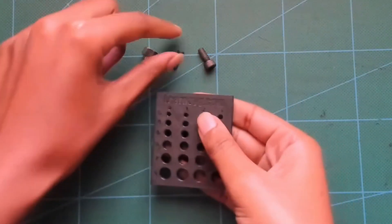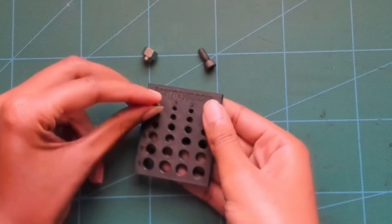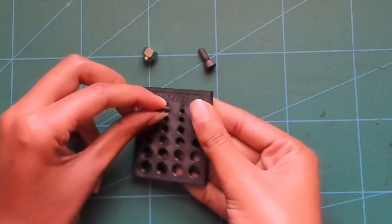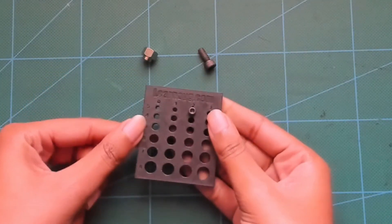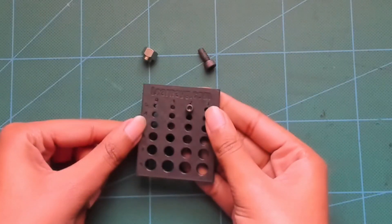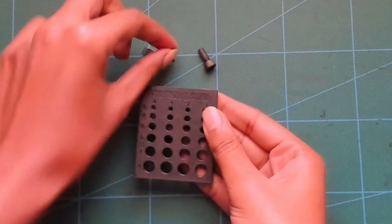We can try it with an M3 screw. It doesn't fit in the 0.0 or the 0.1, but it does fit in the 0.2. So in my CAD software, I'll make all the holes for M3 screws 3.2 millimeters.